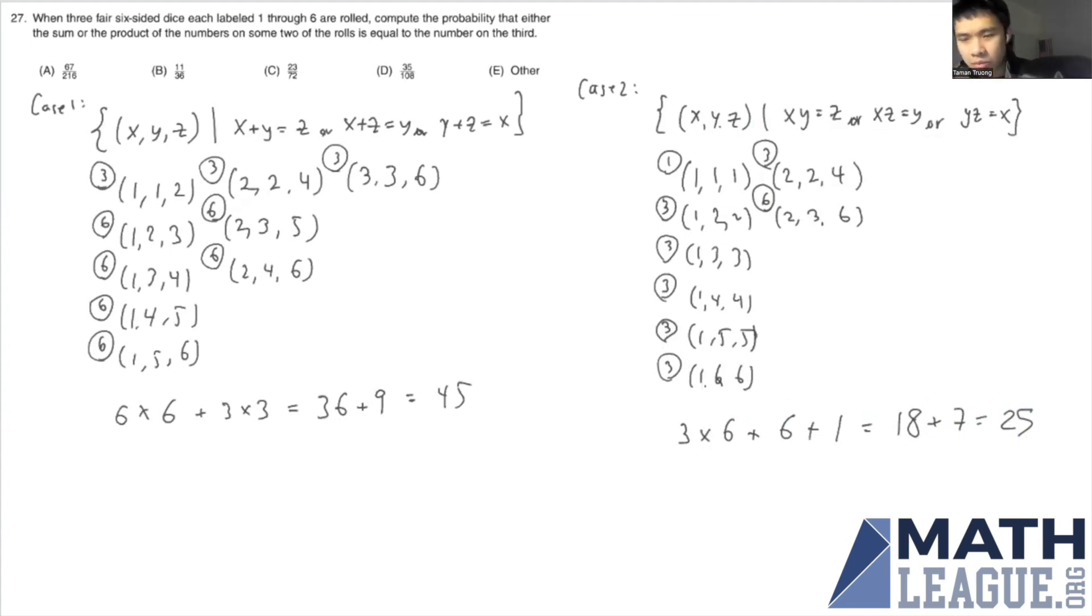But we're not done yet, because this is actually a special case. If we realize that the intersection of these two sets, we see that the permutation that they have in common are all the permutations of 2, 2, and 4.